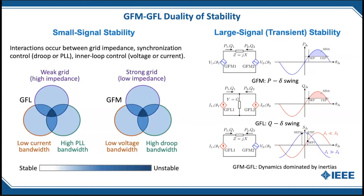That duality carries forward into angle stability. For small-signal effects, it's often said that a grid-following inverter becomes unstable in a weak grid or high-impedance situation — but it's more complicated. It's really about voltage drops across impedances interacting with both the PLL and the current controllers. A combination of poor tuning of the three is most likely to cause instability; in fact, for a weak grid with well-chosen current controllers and PLLs, you can remain stable down to very low values. The dual applies to the grid-forming inverter, which is more likely to be unstable in a strong grid or with a low voltage control bandwidth or high droop bandwidth. This duality carries forward into large-signal transients as well.